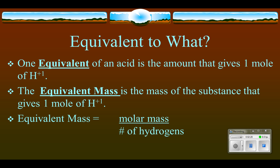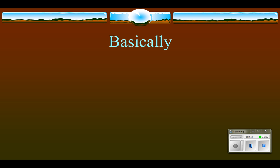To calculate equivalent mass, simply take the molar mass of the substance and divide it by the number of hydrogens. You add up the molar mass, look at how many hydrogens there are, divide by that number, and you have the equivalent mass.